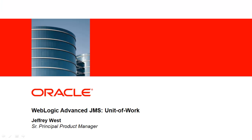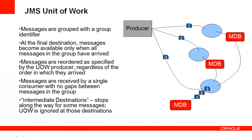Hi, this is Jeff West with Oracle. I'd like to give you an overview and a demo of an advanced feature in WebLogic for JMS called Unit of Work. The Unit of Work feature allows you to configure a JMS destination to deliver JMS messages containing the same Unit of Work ID in a single batch to a single consumer.